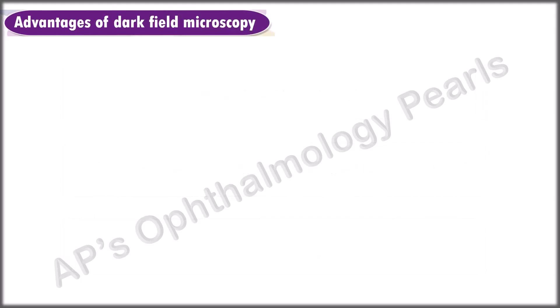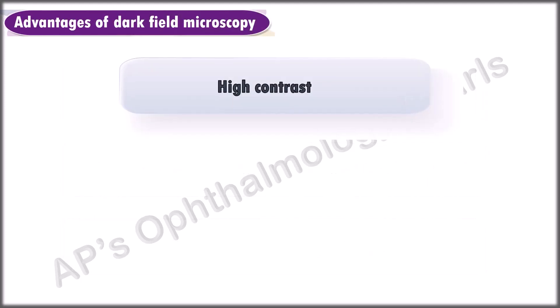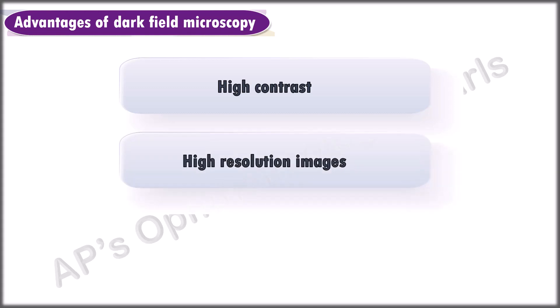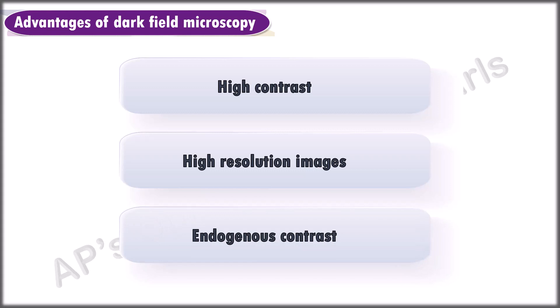The advantages of dark field microscopy are high contrast of bright structures on a dark background, the potential for high resolution images, and endogenous contrast which therefore eliminates the need for external dyes and allows examination of tissues in their natural state.